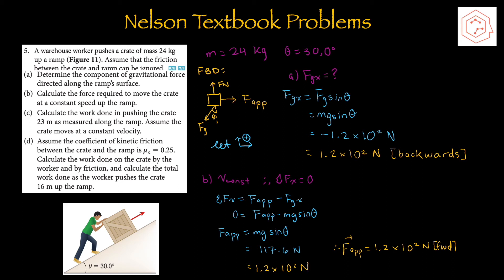Part B: calculate the force required to move the crate at a constant speed up the ramp. At constant speed, net force in the x-component equals zero since there's no acceleration. So the applied force minus the gravitational force's x-component equals zero, meaning applied force equals mg sin theta, giving 1.2 × 10² newtons forward.